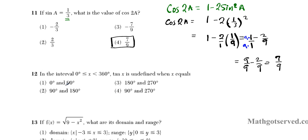Let's move on to question 12. It says: in the interval 0 ≤ x < 360 degrees, tan x is undefined when x equals what value in this domain interval? To do this, it's good to know your quotient identities for tan. Tan x can be expressed as sine x over cosine x.